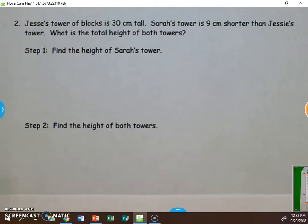First, we read the problem. Jesse's tower of blocks is 30 centimeters tall. Sarah's tower is 9 centimeters shorter than Jesse's tower. What is the total height of both towers?